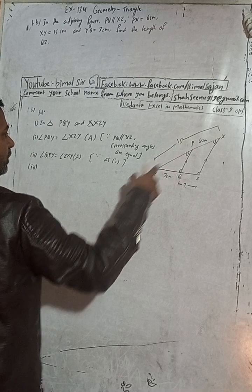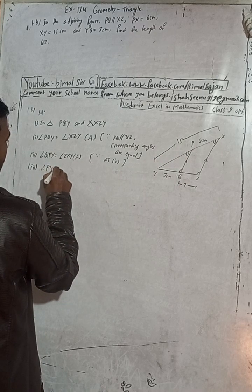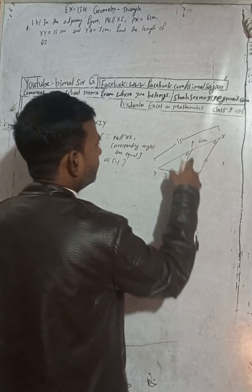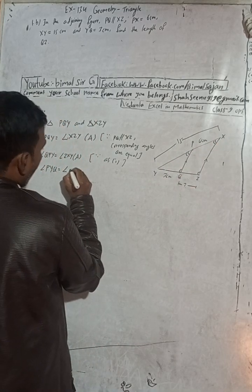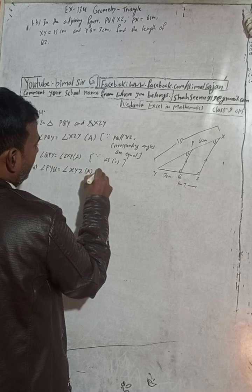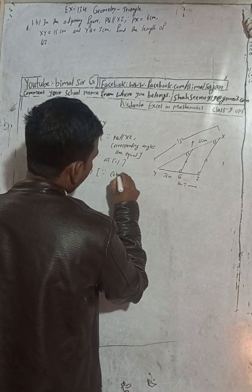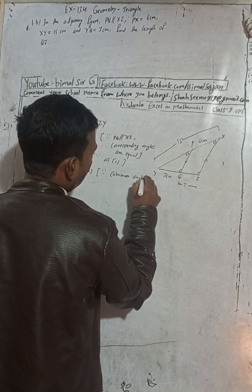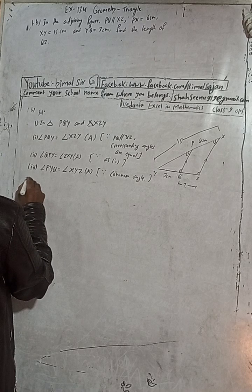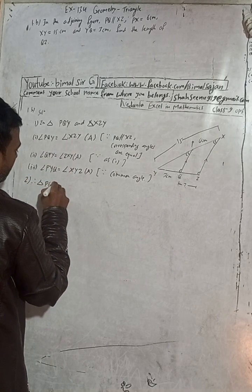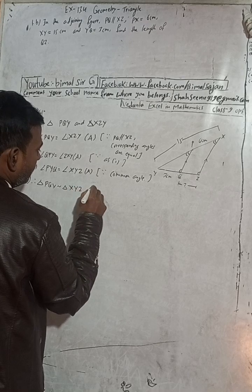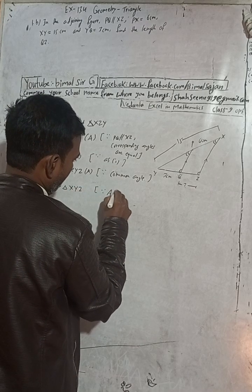The third angle: angle PYQ is equal to angle XYZ, which is the common angle — common to both triangles. Therefore, triangle PQY is similar to triangle XYZ by the Angle-Angle-Angle (AAA) criterion.